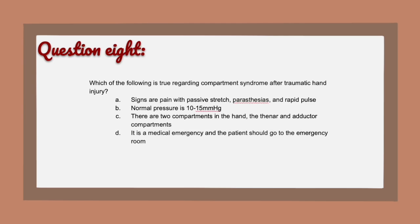Question 7 option D: Dynamic stabilization of the wrist flexor muscle group will provide stability. Question 8: Which of the following is true regarding compartment syndrome after traumatic hand injury? A) Signs are pain with passive stretch, paresthesias, and rapid pulse. B) Normal pressure is 10 to 15 millimeters of mercury. C) There are two compartments in the hand — the thenar and the adductor compartments. D) It is a medical emergency and the patient should go to the emergency room.